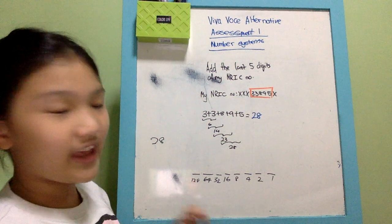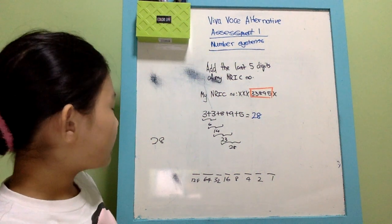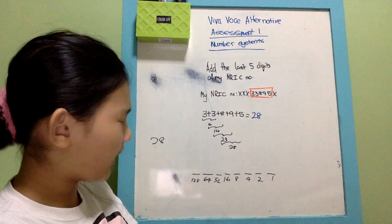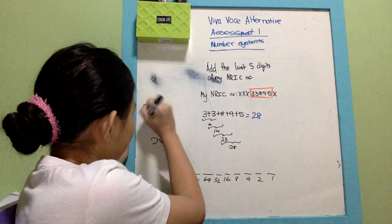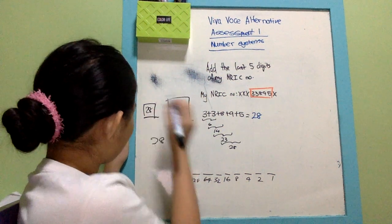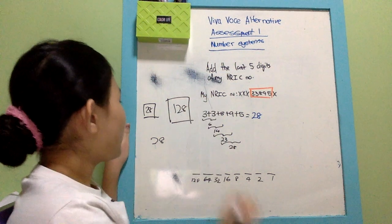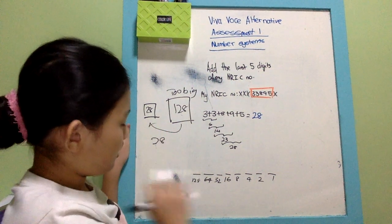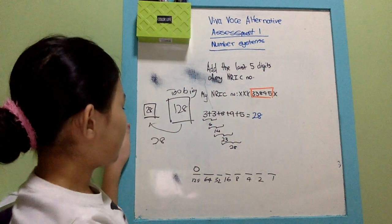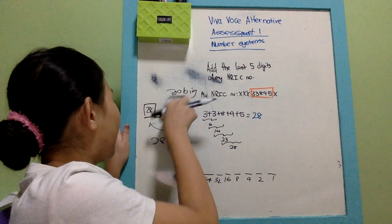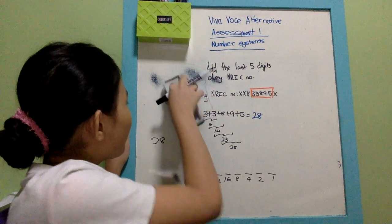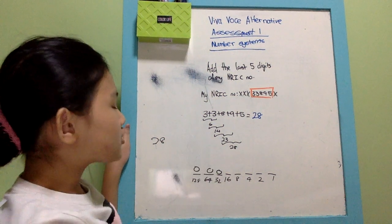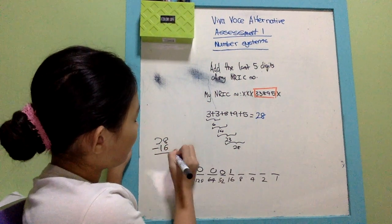Now I'll teach you the eight-lines method. Think of two boxes: one is size 28 and the other is size 128. You can't put 28 inside 128 because 128 is too big — so if a number is too big to fit, you put a zero. But if the number is small enough to fit, you put a one. For example, 128 is too big, 64 is too big, but 16 can fit inside 28, so you put a one. Then you subtract 16 from 28.